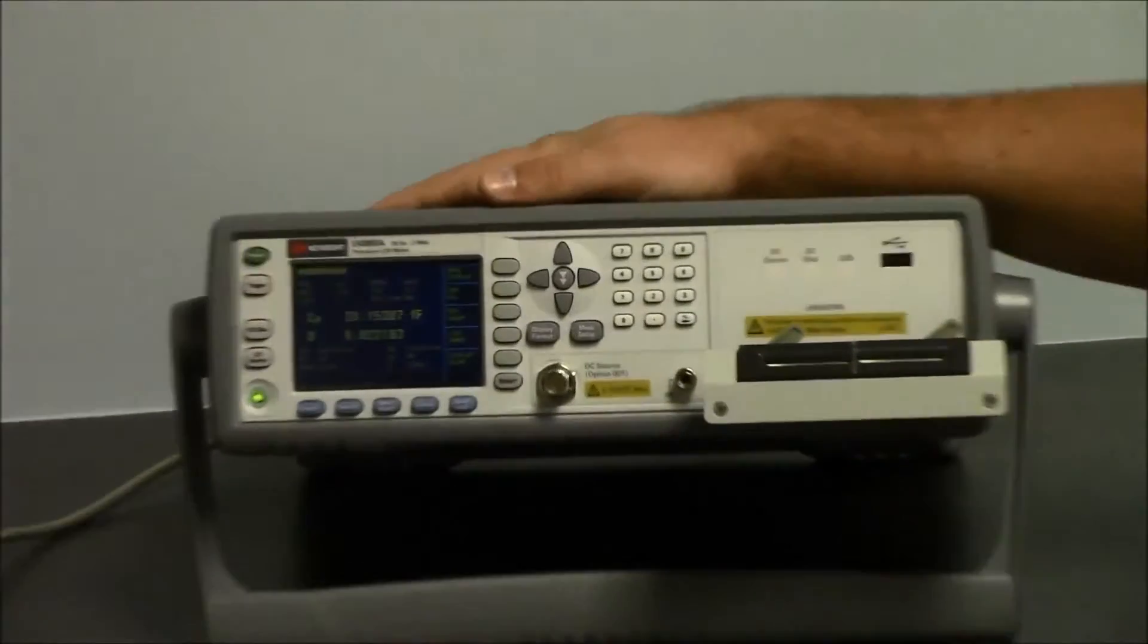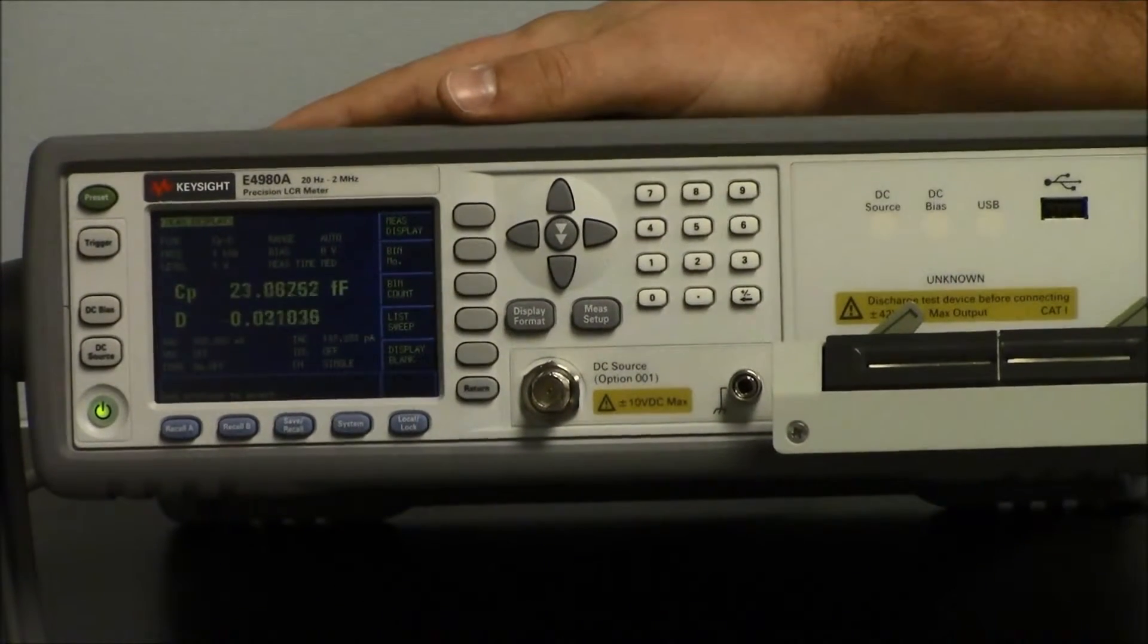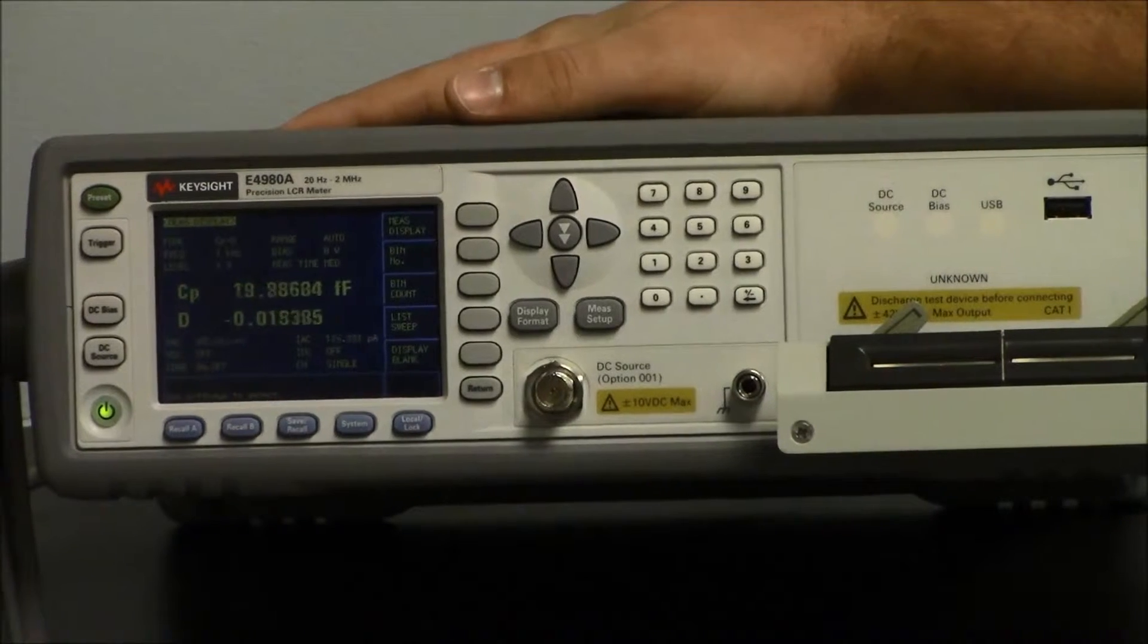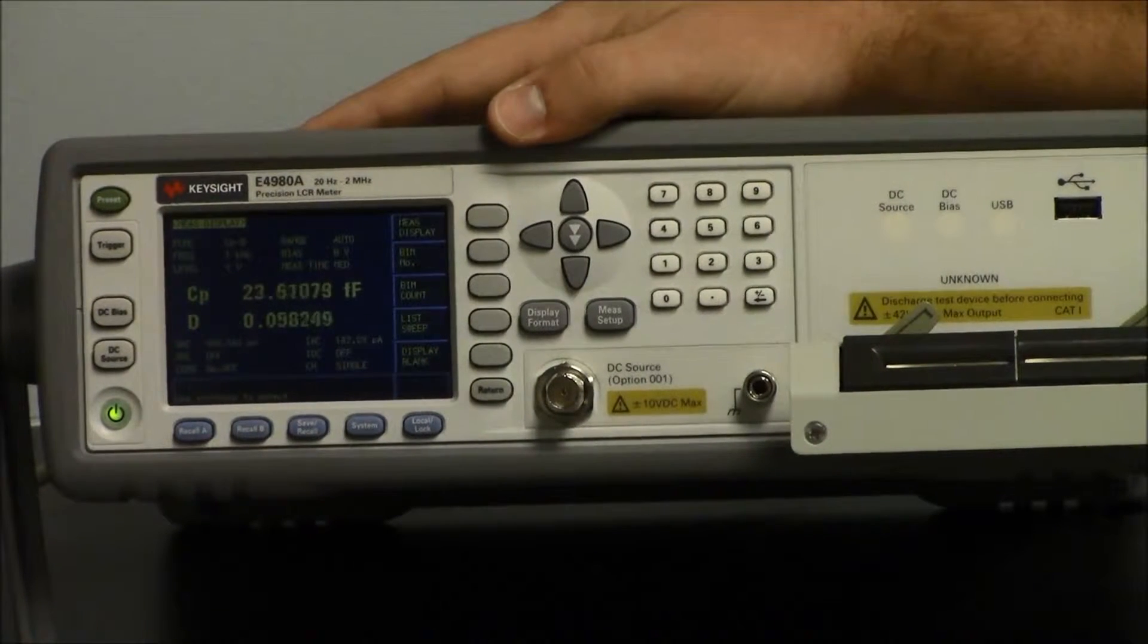Now an open and short correction is important to remove stray admittance and residual impedance from your measurement path. This will enable you to obtain an accurate measurement of your device.